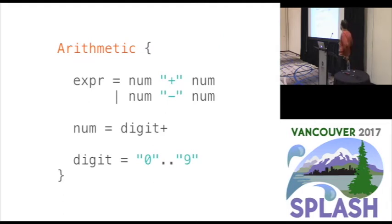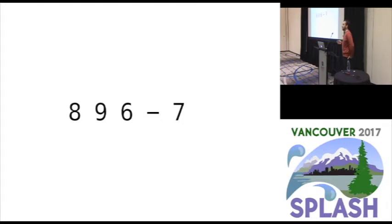So let's talk about a specific example. We'll use the classic arithmetic grammar. This is a really rudimentary language that only supports addition and subtraction expressions. So a number plus a number or a number minus a number. And I want to talk about how a packrat parser will go about parsing the input 896 minus 7.